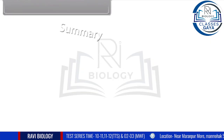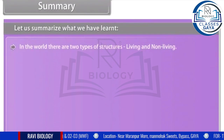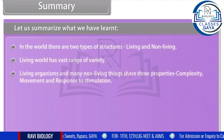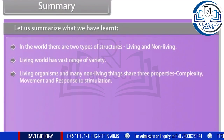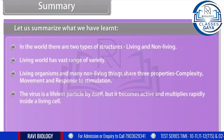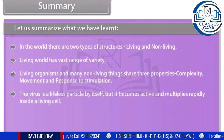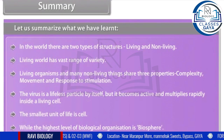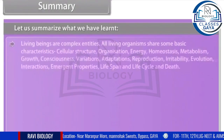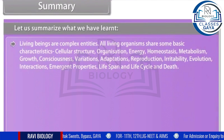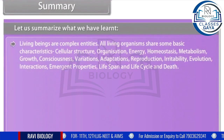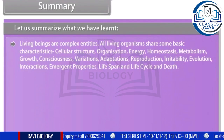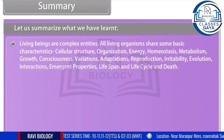Summary: in the world, there are two types of structures — living and non-living. The living world has a vast range of variety. Living organisms and many non-living things share three properties: complexity, movement, and response to stimulation. The virus is a lifeless particle by itself, but becomes active and multiplies rapidly inside a living cell. The smallest unit of life is the cell, while the highest level of biological organization is the biosphere. All living organisms share basic characteristics: cellular structure, organization, energy, homeostasis, metabolism, growth, consciousness, variations, adaptations, reproduction, irritability, evolution, interactions, emergent properties, lifespan and life cycle, and death.